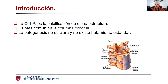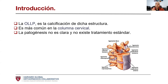A manera de introducción, como su nombre lo indica, la osificación del ligamento longitudinal posterior es precisamente la calcificación de esta estructura. Sabemos que es un ligamento que va por la parte posterior de los cuerpos vertebrales, desde el axis hasta el sacro. Si bien es un poco más delgado que el anterior, nos brinda cierta resistencia y protección de la columna, protege ligeramente las propulsiones de los discos intervertebrales y tiene terminaciones nociceptivas que generan dolor.